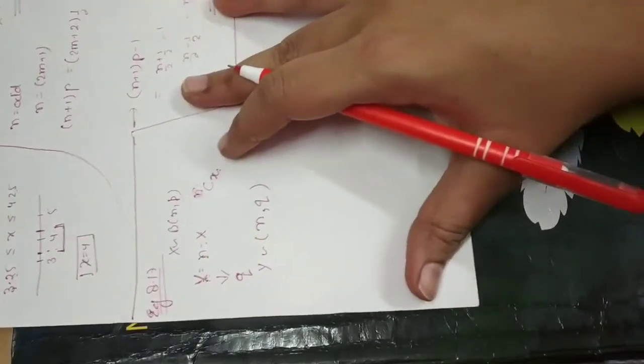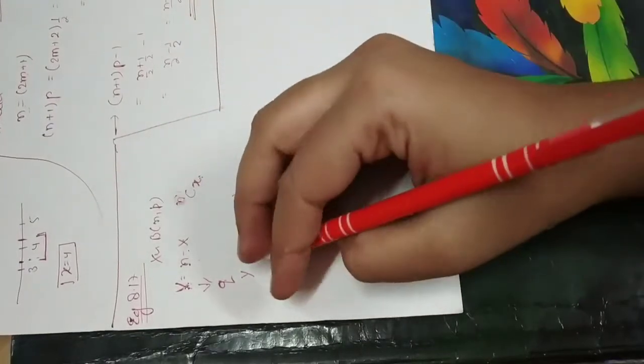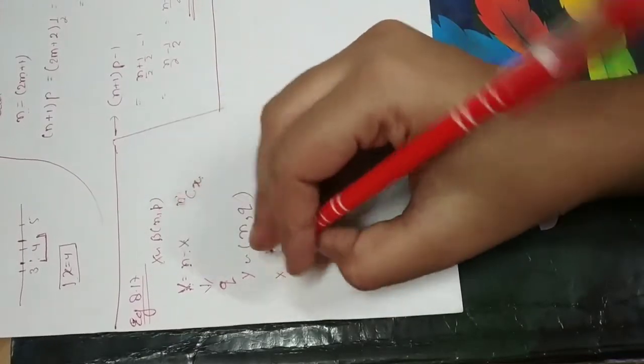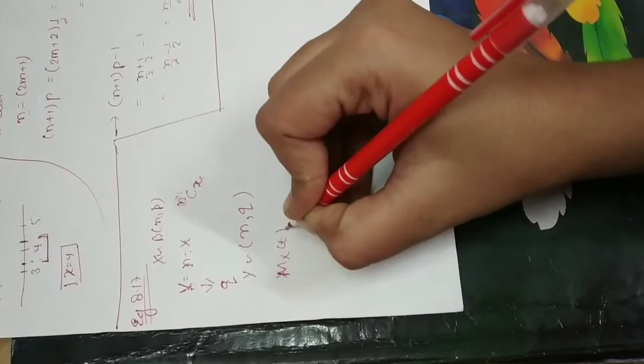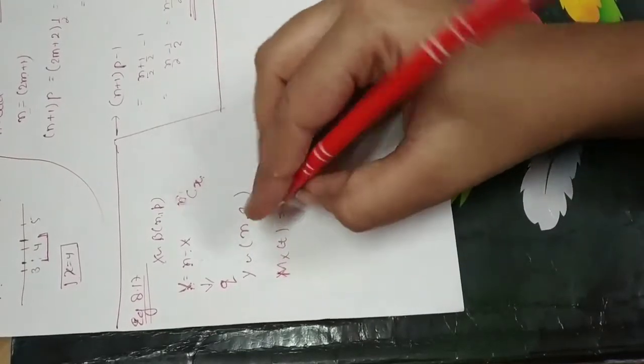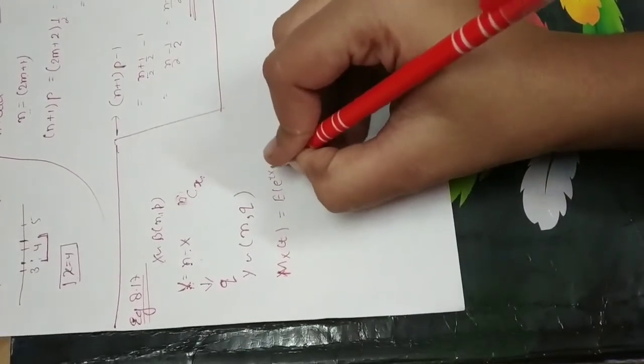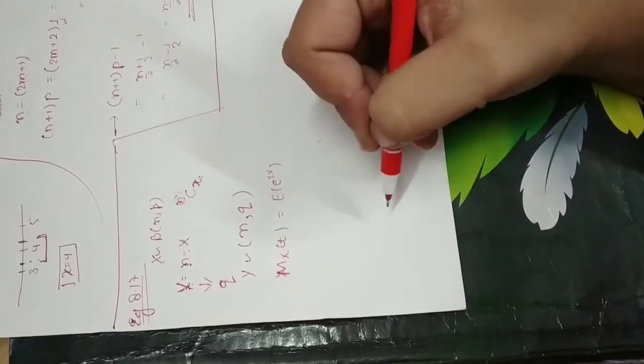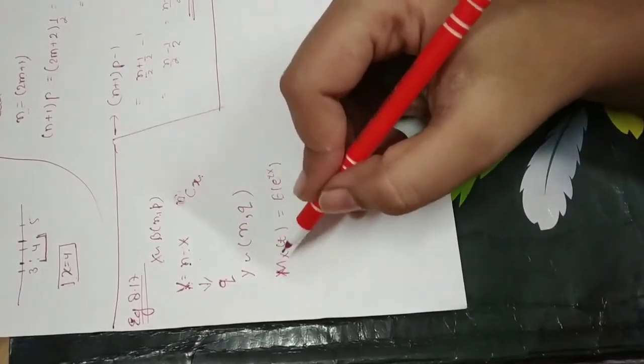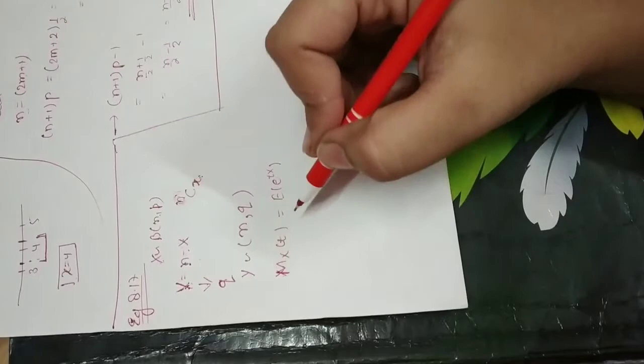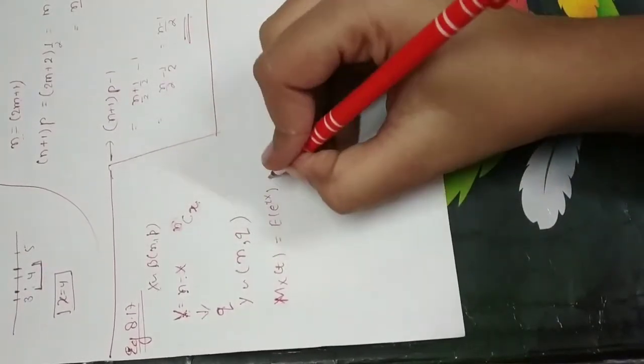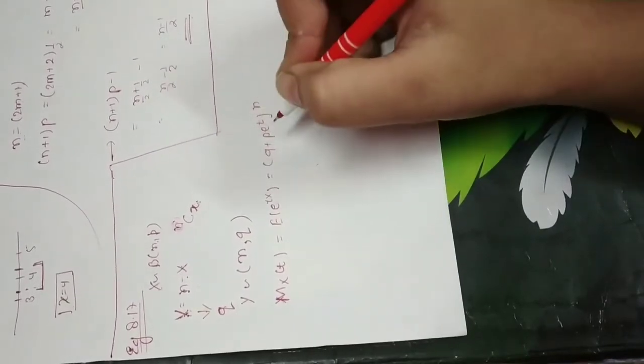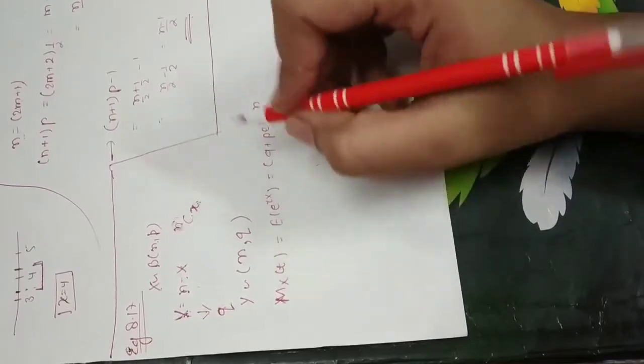Now the other way is given in your book page number 8.16. If X follows binomial n,p you will know that M_X(t) is the moment generating function of binomial distribution. What is the expectation e to the power tX? If you have not proven it, I will put this link in the description box. The moment generating function is q plus p e to the power t, whole to the power n. So here I have written it.